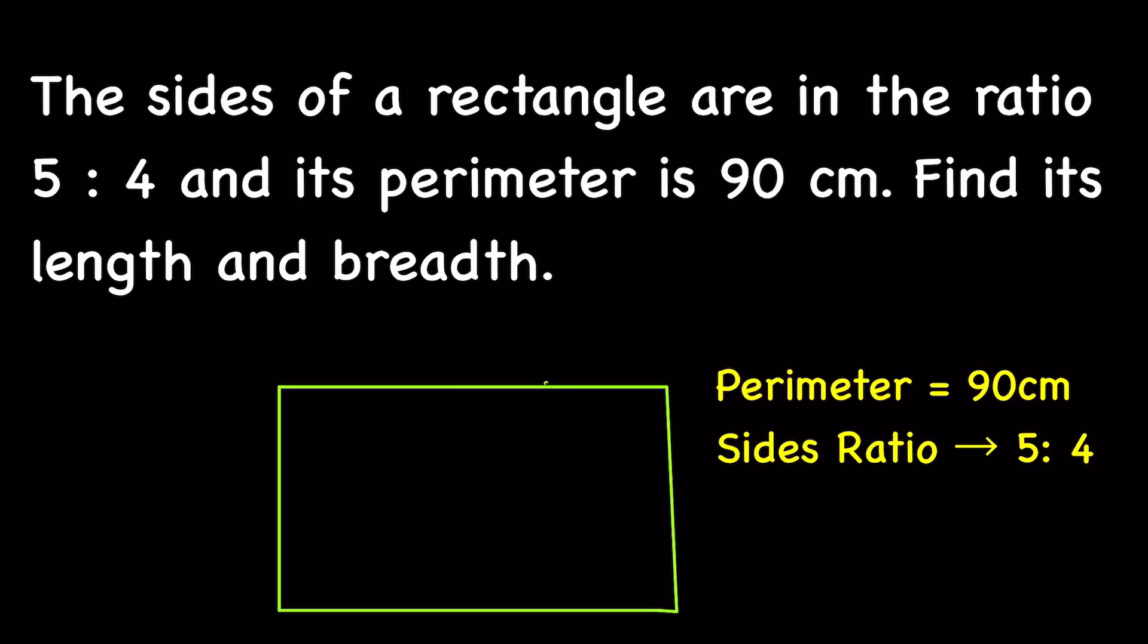The sides of a rectangle are in the ratio of 5 is to 4 and its perimeter is 90 centimeter. Find its length and breadth. So this is a rectangle, consider it is a rectangle ABCD.